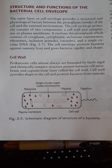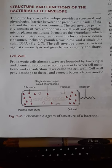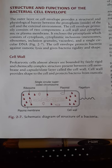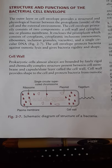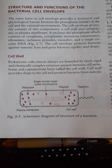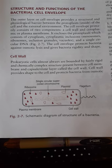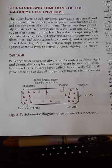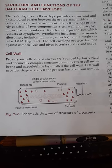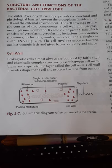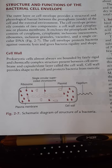Today we will study the structure and functions of the bacterial cell envelope. The outer layer or cell envelope provides a structural and physiological barrier between the protoplasm of the cell and the external environment. The cell envelope primarily consists of two components: a cell wall and a plasma membrane or cytoplasmic membrane.